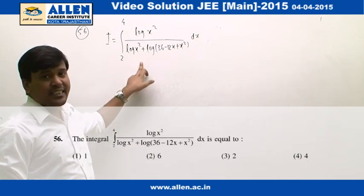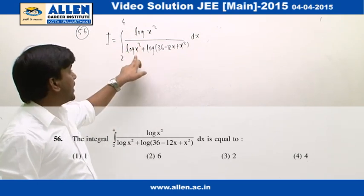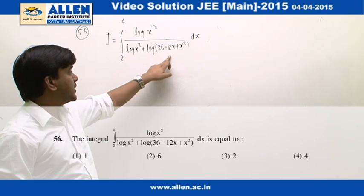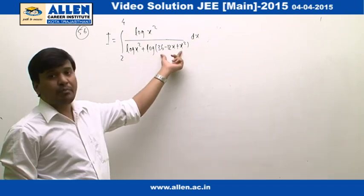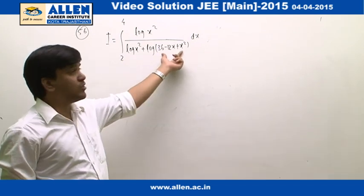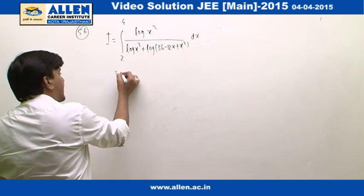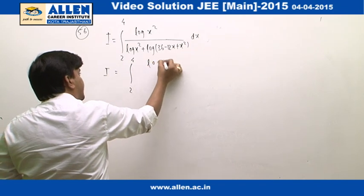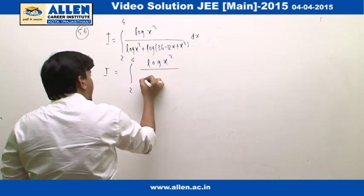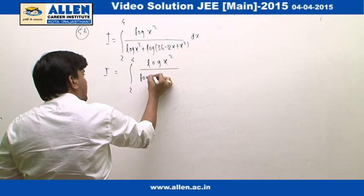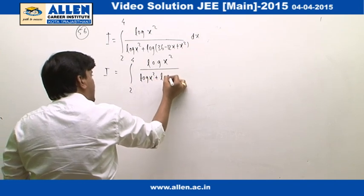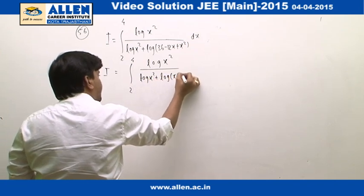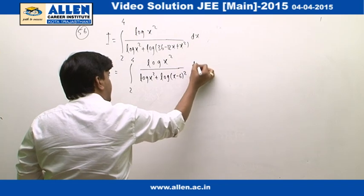In this question we have to evaluate this integral, 2 to 4 log x square upon log x square plus this expression. We can see this is nothing but the perfect square of 6 minus x. So this can be written as i equals 2 to 4 log x square upon log x square plus log of 6 minus x whole square dx.